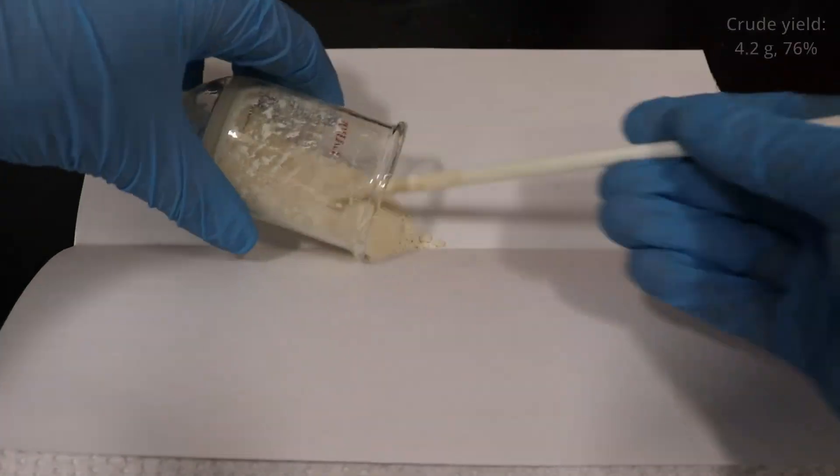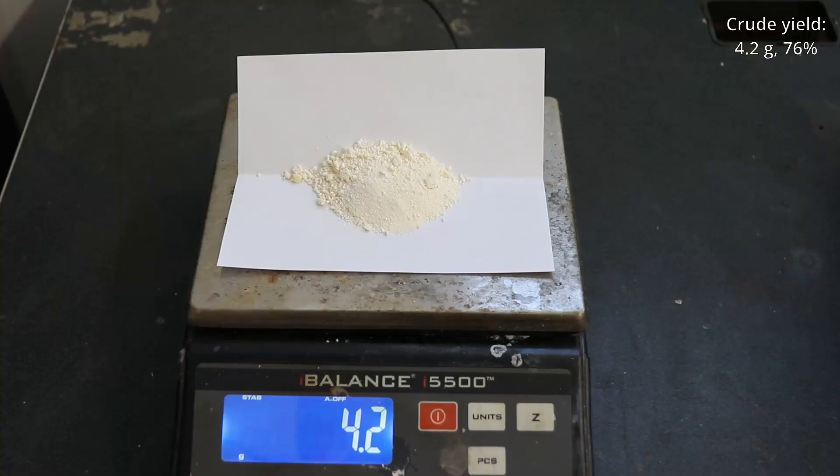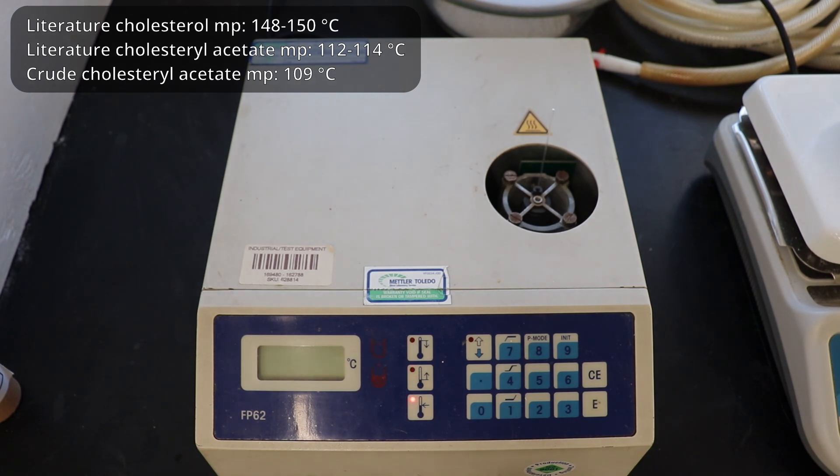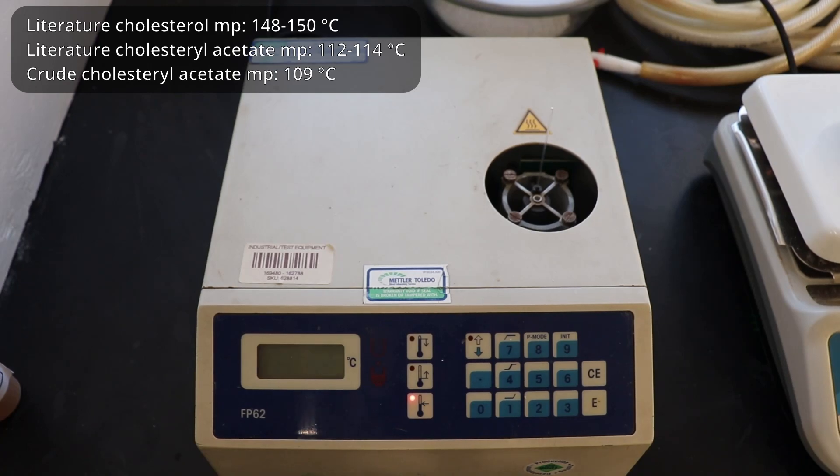The yield of crude material was 4.2 grams, which is 76%. However, the melting point was 109 degrees celsius, while the literature melting point is 112 to 114 degrees celsius, so this material was in need of a recrystallization.